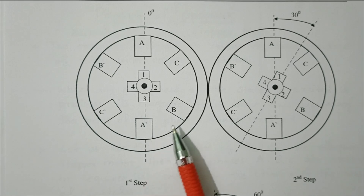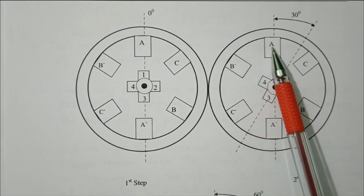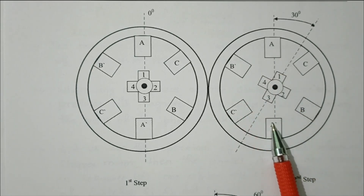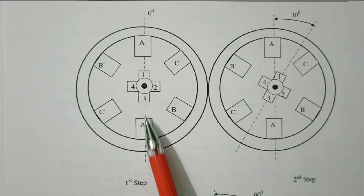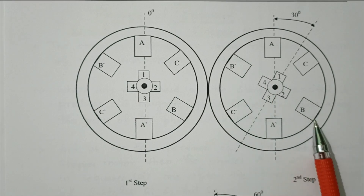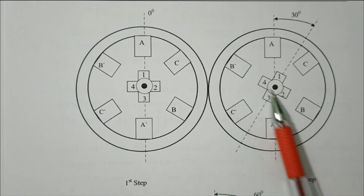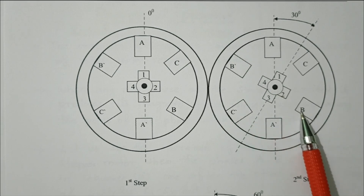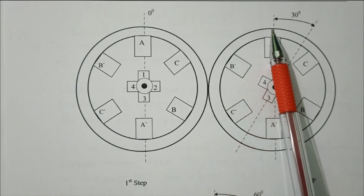After some time, b/b-dash is excited and a/a-dash is de-energized — that is, switch S1 is open and S2 is closed. So b/b-dash is energized. Now the rotor aligns with b/b-dash: rotor pole 2 aligned with b, rotor pole 4 aligned with b-dash. So it has rotated approximately 30 degrees.